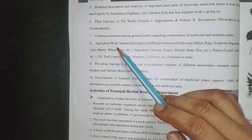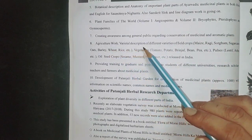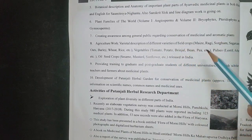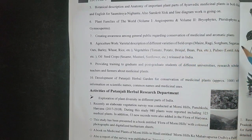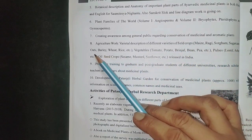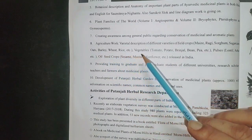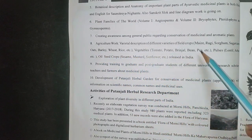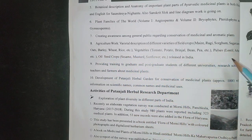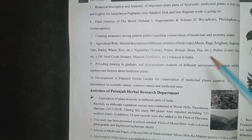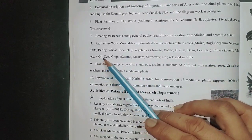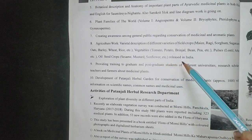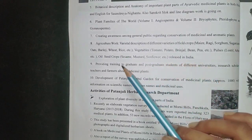Agriculture work includes varietal description of different varieties of field crops like maize, ragi, sorghum, sugarcane, oats, barley, wheat, rice, etc. Vegetables like tomato, potato, brinjal, bean, pea, etc. Pulses like lentil, arahar, etc. Oil seed crops like sesame, mustard, and sunflower released in India.